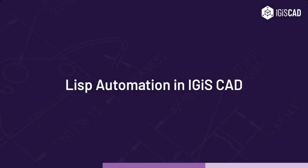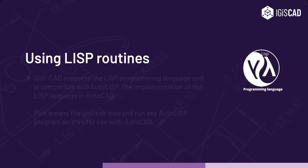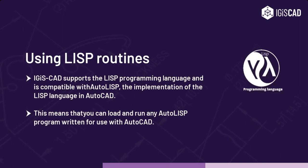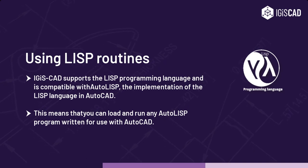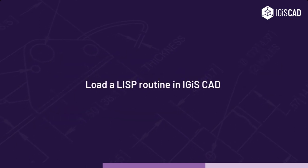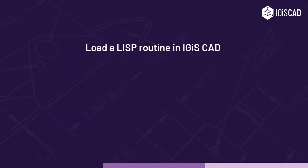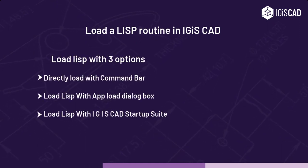This video briefs you about LISP automation in IGIS CAD using LISP routines. IGIS CAD supports the LISP programming language and is compatible with AutoLISP, the implementation of the LISP language in AutoCAD. This means that you can load and run any AutoLISP program written for use with AutoCAD. IGIS CAD provides three options to use LISP routines.